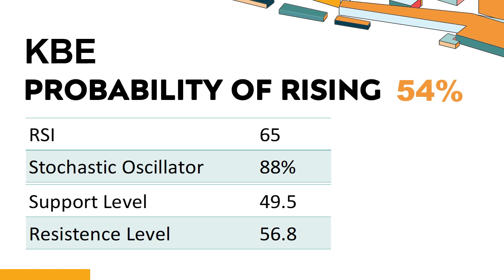The current stochastic oscillator of KBE is 88%. When the stochastic oscillator rises above the 80 level, it is usually considered overbought, indicating that the stock may be due for a price pullback. An overbought condition occurs when a stock's price rises too fast and too high in a short period of time and can be a sign that buying pressure has exhausted.